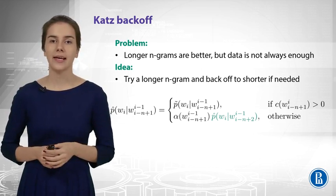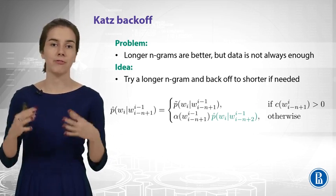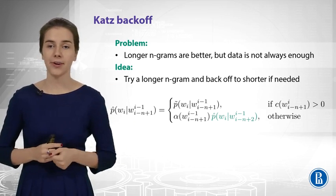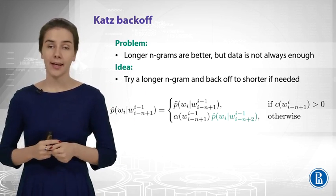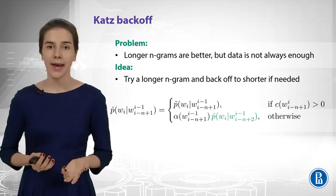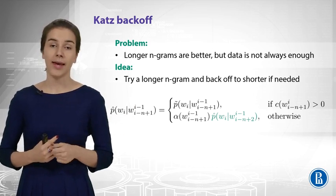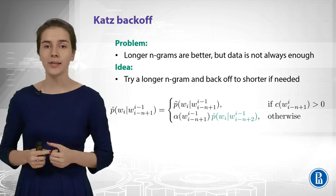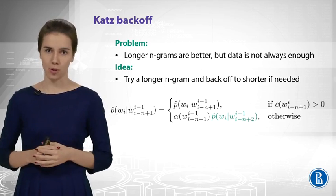Katz Backoff is an implementation of this idea. Let us start, for example, with a 5-gram language model. If the count is greater than 0, then awesome, go for it! If it's not greater than 0, then let us be not that greedy and go for a 4-gram language model. And again, if the count is greater than 0, then we go for it; else we go to the 3-gram language model.